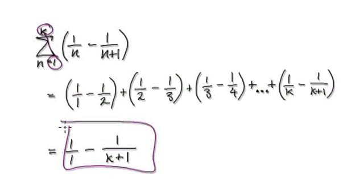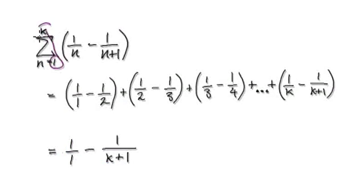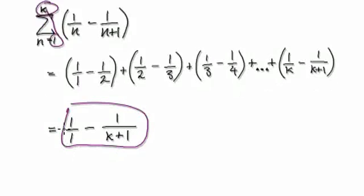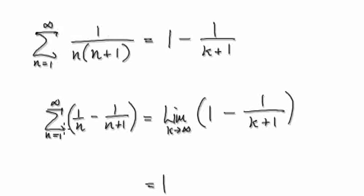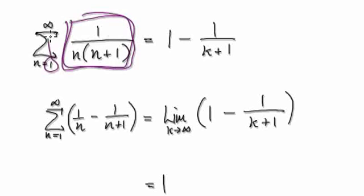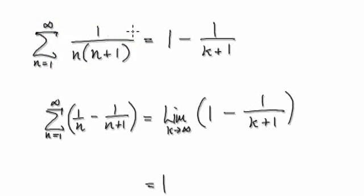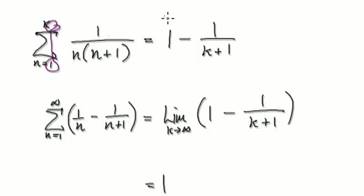So when you sum it up from 1 to an arbitrary term k, it will give you this. So what we've got so far is that if you try and sum up from the first term all the way to k, it will then give you this.